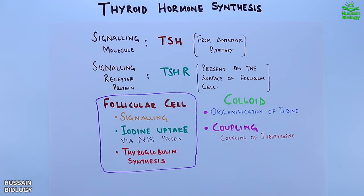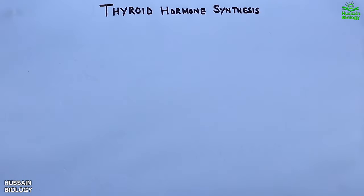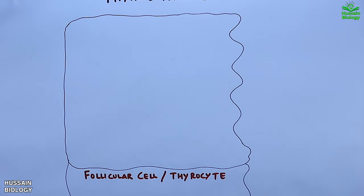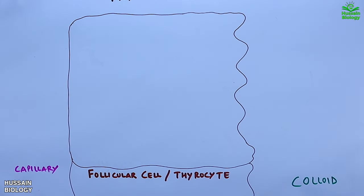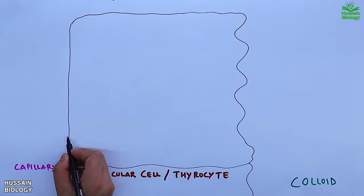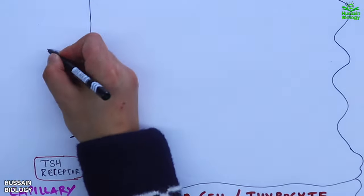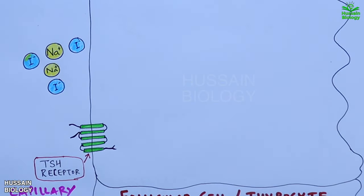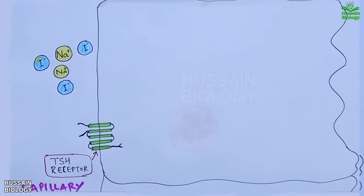Now let's get to the process of thyroid hormone synthesis in detail. Here we have the follicular cell (or thyrocyte). On the right we have the colloid, and on the left we have the capillary — the blood circulation. The TSH receptor is shown on the follicular cell, and in the blood circulation we have sodium ions and iodine ions in the form of iodide ions.